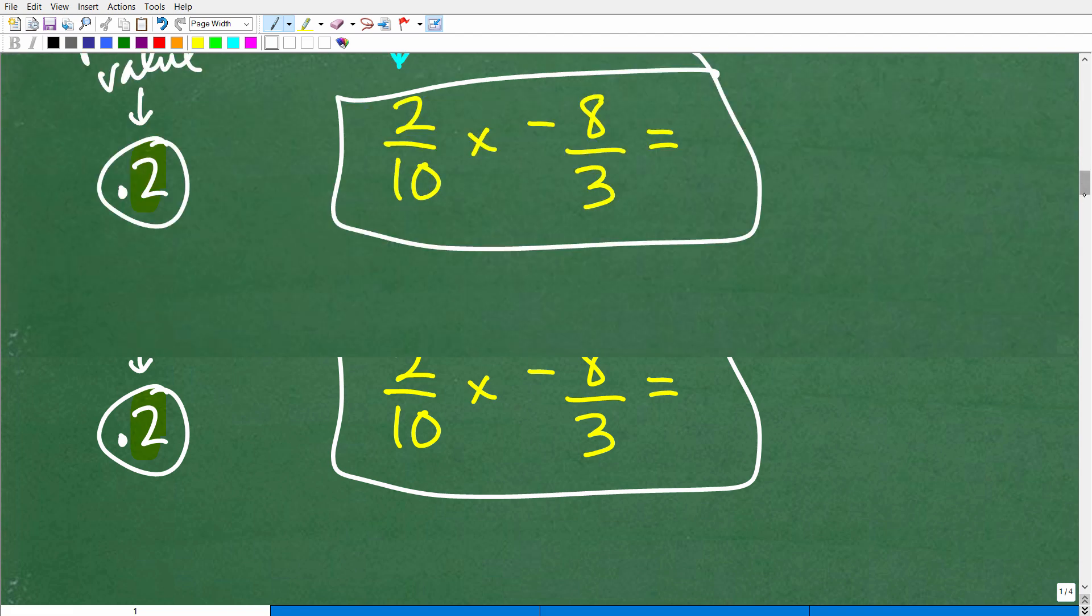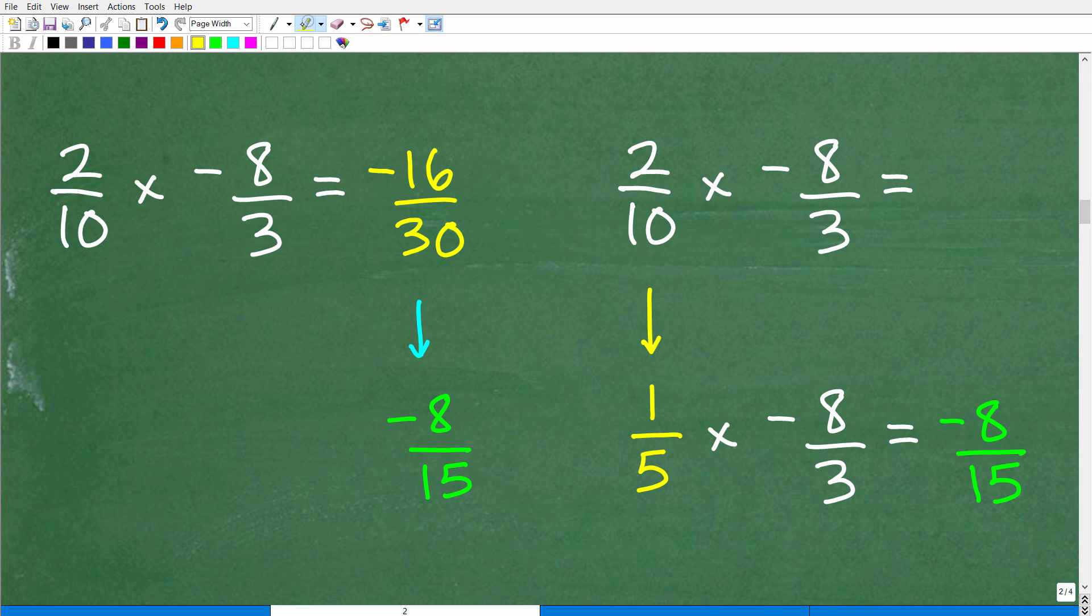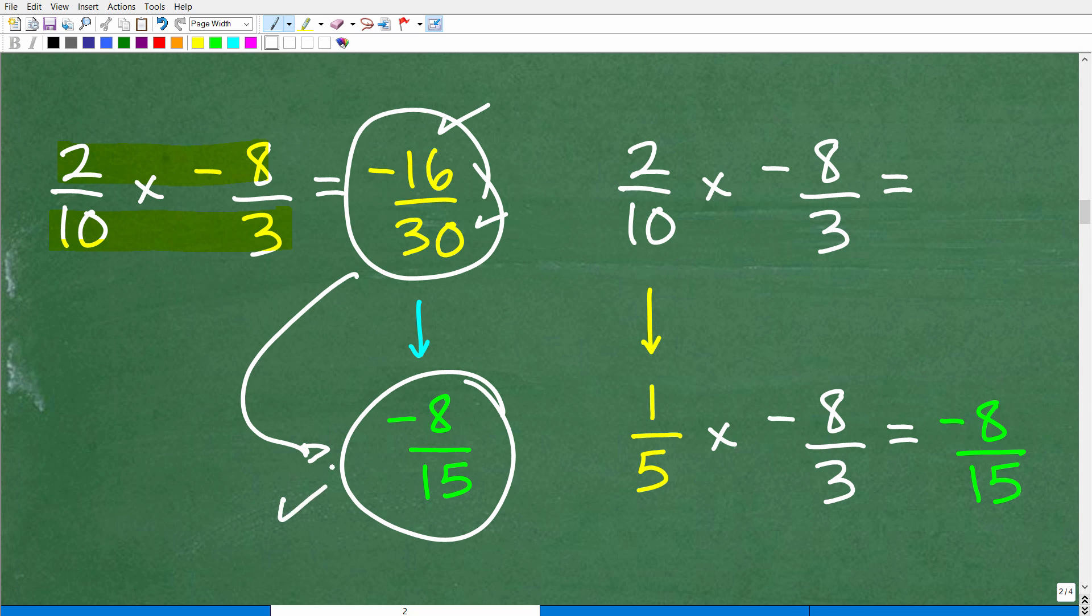And how do we multiply fractions? It's super easy. All you do is simply multiply the respective numerators and denominators. So here you can go 2 times negative 8, which, of course, is negative 16. 10 times 3 is 30. But you always try to reduce your final answers. So negative 16 over 30, we can reduce down to negative 8 over 15, which, of course, is the answer. 2 can go into 16, 8. 2 goes into 30, 15. Of course, we have these negative signs, but here is the answer.